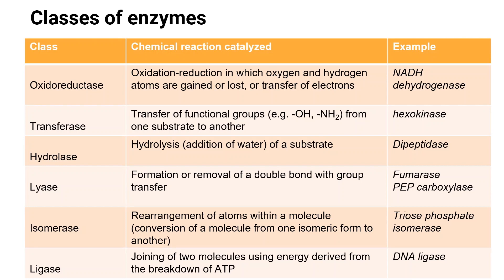As mentioned, there are six classes of enzymes. Oxidoreductase catalyzes oxidation-reduction reactions in which oxygen and hydrogen atoms are gained or lost, or involves transfer of electrons. An example is NADH dehydrogenase.